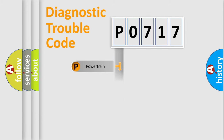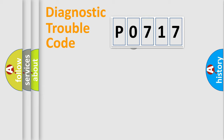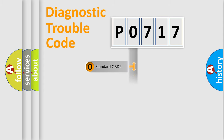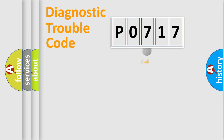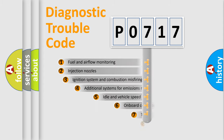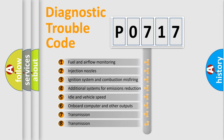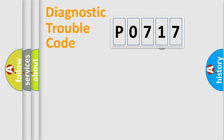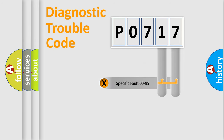The four units are: Powertrain, Body, Chassis, and Network. This distribution is defined in the first character of the code. If the second character is expressed as zero, it is a standardized error. In the case of numbers 1, 2, or 3, it is a manufacturer-specific error code. The third character specifies a subset of errors. The distribution shown is valid only for the standardized DTC code. Only the last two characters define the specific fault of the group.